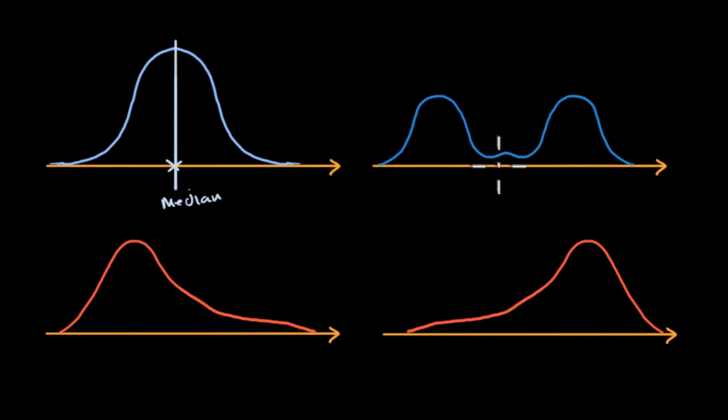Here we have a slightly more unusual distribution. This would be called a bimodal distribution. We have two major lumps right over here, but it is symmetric. That point of symmetry is right over here, and so this value, once again, would be the median. Another way to think about it is the area to the left of that value is equal to the area to the right of that value, making it the median.